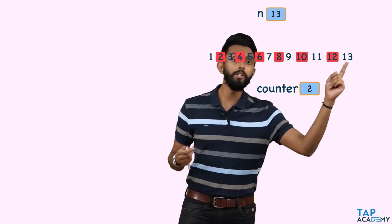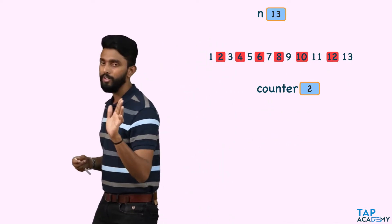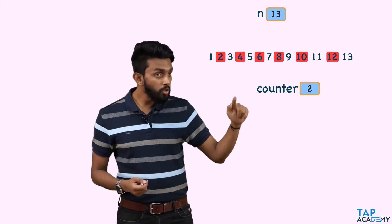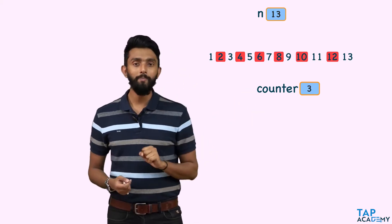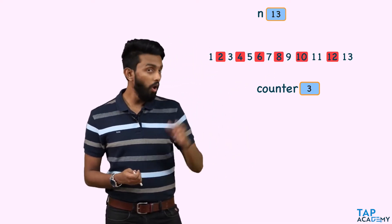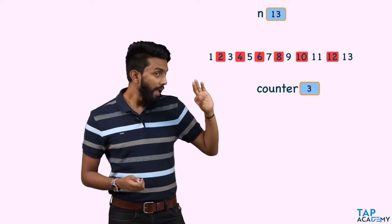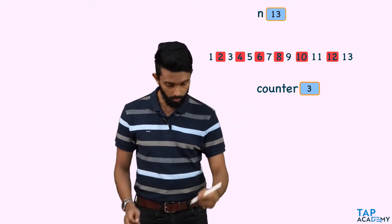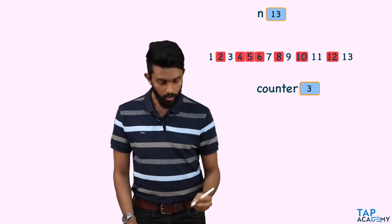But can we now conclude that the number is lucky? No, not yet. The counter value is going to increment — it is going to become 3. Now, of all the values which are remaining, every third number is unlucky.